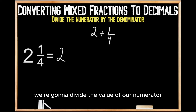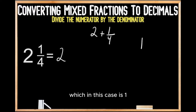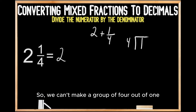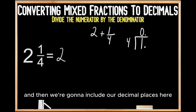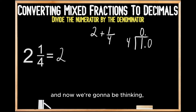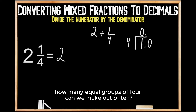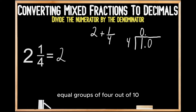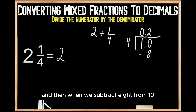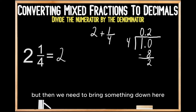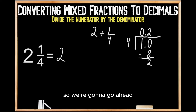Now we just need to convert our fractional part into a decimal. To do this, as highlighted in yellow, we're going to divide the value of our numerator — which in this case is 1 — by the value of our denominator — which in this case is 4. We can't make a group of 4 out of 1, so we're going to have to go into our decimal places. We write our 0 up top and include our decimal places so that we have some numbers to bring down. Now we're going to be thinking: how many equal groups of 4 can we make out of 10? We know we can make 2 equal groups of 4 out of 10, so we write our 2 up top and multiply 2 times 4, which gives us 8. We write our 8 down below, and when we subtract 8 from 10 we're left with 2. We need to bring something down, so we write a 0 there, giving us 20.